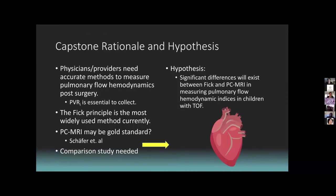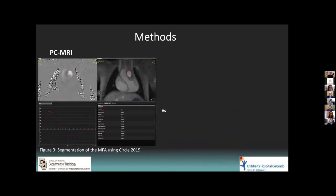This leads to the capstone rationale. Physicians and providers need accurate methods to measure pulmonary flow hemodynamics post-surgery. We need an accurate way to measure flow, which is QP, which leads to our pulmonary vascular resistance measurement, which really informs physicians on treatment. Right now, the FIC principle is the most widely used method in the cath lab. It's more invasive, more time-consuming, and these children go under anesthesia as they're very young. It relies on accurate oxygen consumption values, which is only set for adults and pretty poor for children. Previous studies, such as Schaefer et al., found that PCMRI may be the gold standard. They found vast differences between PCMRI and FIC in children with pulmonary hypertension. So a comparison study is needed, which leads us to a hypothesis that significant differences will exist between FIC and phase contrast MRI in these children.